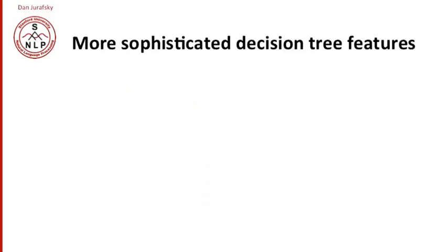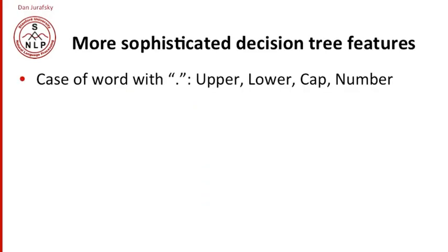So one thing we can use is the case, or it's called the word shape of the word with a period. Am I an uppercase word? Am I a lowercase word? Am I all caps? So uppercase meaning the first letter is uppercase. Lower meaning it's lowercase. Cap meaning it's all caps. Am I a number? Any of these kind of word shape features can give us information.